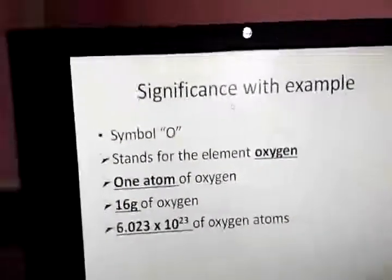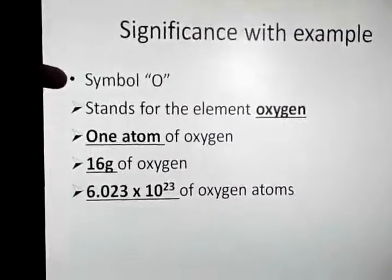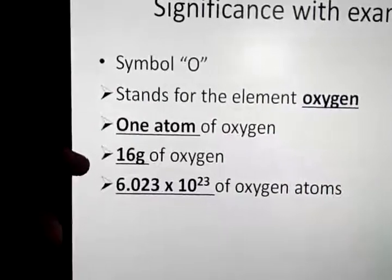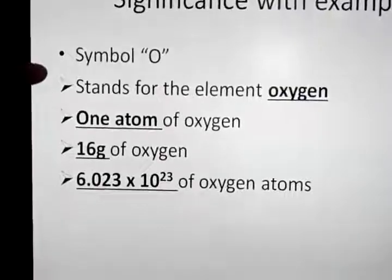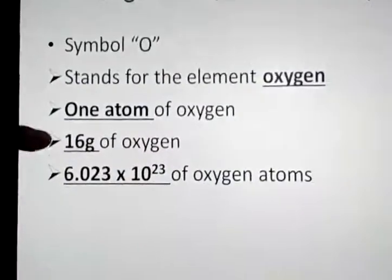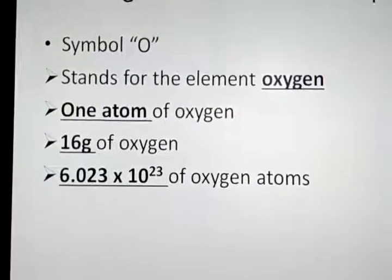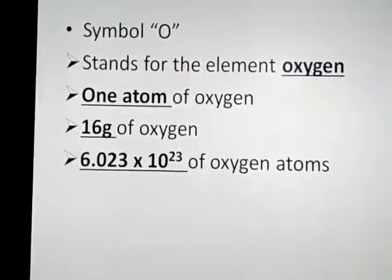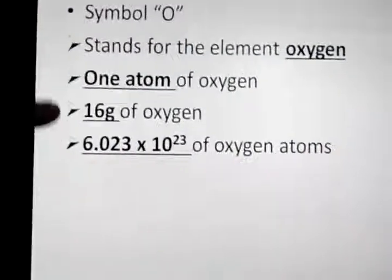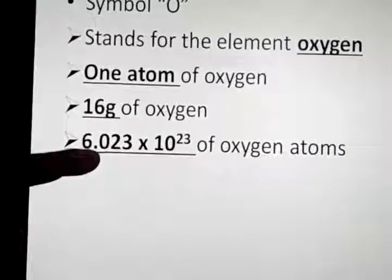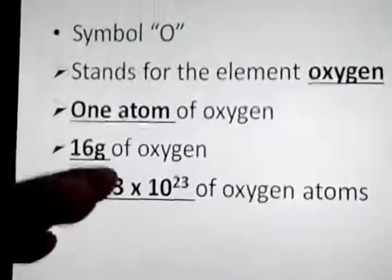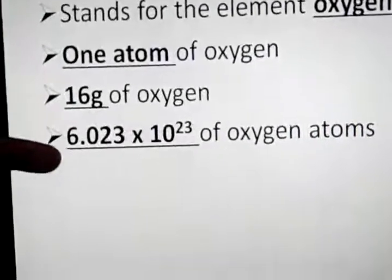Let me explain the significance with an example. Take the symbol O. Qualitatively, it stands for the element oxygen and one atom of oxygen. Quantitatively, it represents 16 grams of oxygen — that is the standard atomic mass of oxygen, already measured and given to us. It also represents one Avogadro's number, that is 6.023 × 10²³ oxygen atoms present in this O.